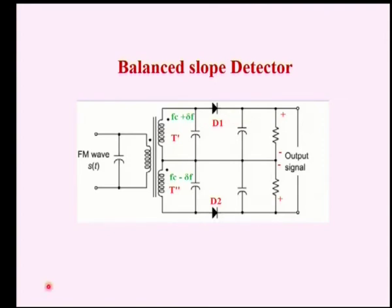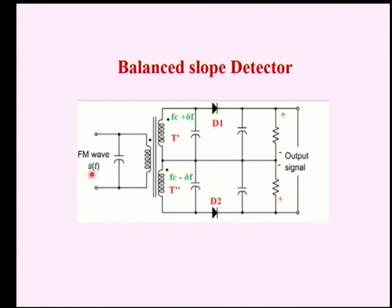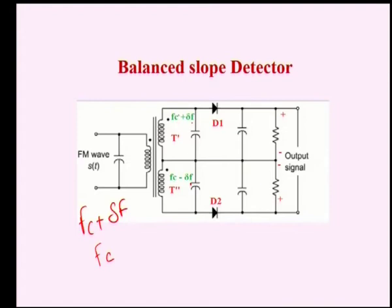The principle is the same as that of the slope detector. There are two sections: when the input signal contains Fc plus ΔF, there will be maximum output at the top section. When the incoming signal has frequency Fc plus ΔF, you get maximum output at the top section and no output at the bottom section, because the bottom section is tuned to Fc minus ΔF. So we get maximum positive output. If the incoming signal has frequency Fc, since the top section is tuned to Fc plus ΔF and the bottom to Fc minus ΔF, the top generates a positive output and the bottom generates a negative output, but both are of the same magnitude.